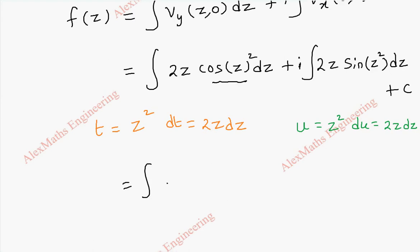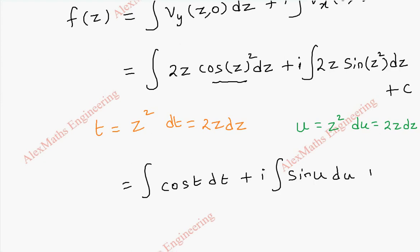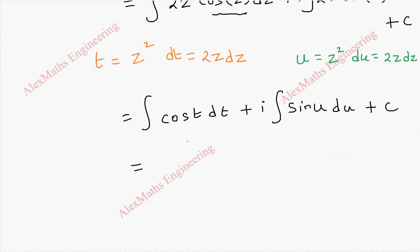This becomes the integral of cos t dt, plus i times the integral of sin u du, plus c. When we integrate, this becomes sin t plus i times minus cos u, plus c.